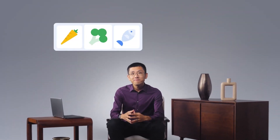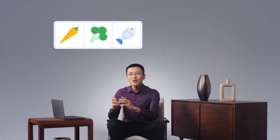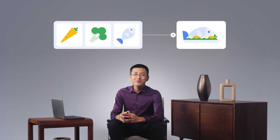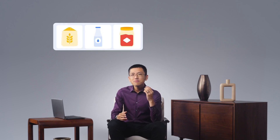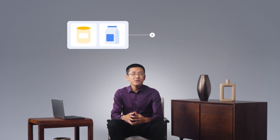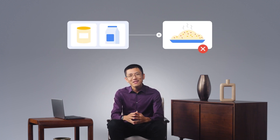It's generally true that the quality of what you start with greatly affects the quality of what you produce. Consider cooking, for example. Let's say you're preparing dinner. If you have fresh, high-quality ingredients, you're more likely to produce a great meal. Conversely, if you're missing an ingredient or the ingredients aren't high quality, the resulting meal may not be as good.